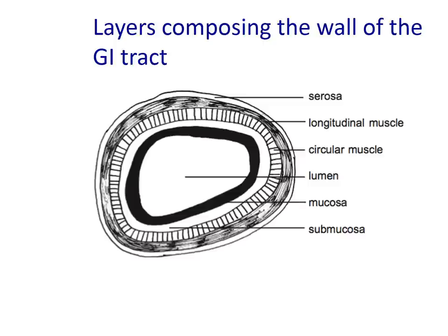The inner layer immediately surrounding the lumen is called the mucosa, composed of a mucous membrane — a simple layer of tissue which secretes and is lined by mucus. Mucus is important because it protects the underlying cells and acts as a lubricant to ease the passage of material along the lumen of the gastrointestinal tract. The thickness of the mucosal epithelium varies along the length of the tract.